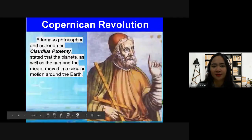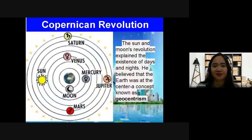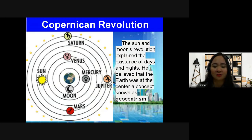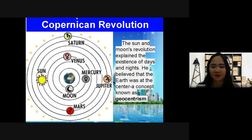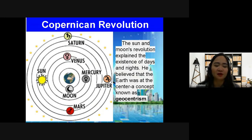Claudius Ptolemy authored and established the theory of geocentrism. In this theory, the Earth is the center of the universe — as you can see on screen, the sun's revolution explained the existence of days and nights. Ptolemy believed the Earth was at the center, a concept known as geocentrism. In the geocentric model, Earth is assumed to be at the center of the solar system, and the most developed geocentric model was that of Ptolemy of Alexandria.